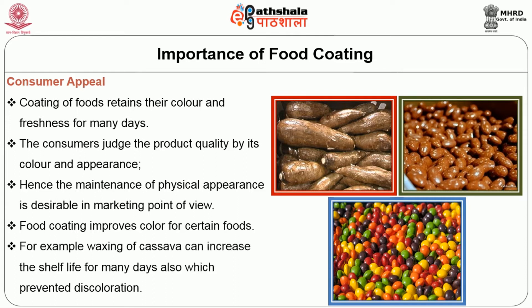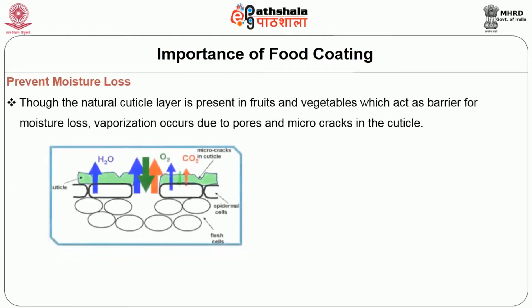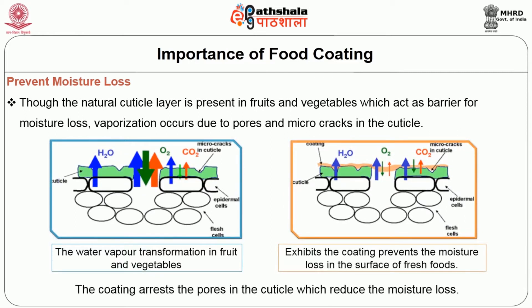Food coating improves color for certain foods. For example, waxing of cassava can increase shelf life for many days and also prevents discoloration. The second benefit is prevention of moisture loss. Though the natural cuticle layer present in fruits and vegetables acts as a barrier for moisture loss, vaporization occurs due to pores and micro cracks in the cuticles. Figure 3a shows water vapor transformation in fruits and vegetables, and figure 3b exhibits how coating prevents moisture loss on the surface. The coating arrests the pores in the cuticle which reduces moisture loss.